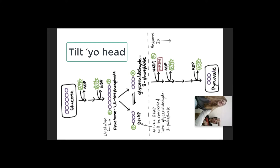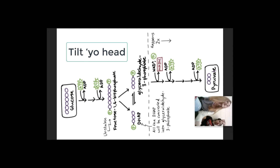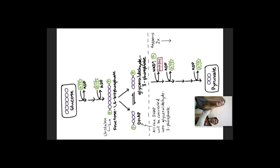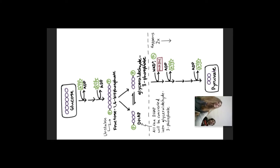This diagram shows the process going from glucose to pyruvate. The top part is the energy-requiring phase. The bottom part happens twice and leads to a net gain in energy.